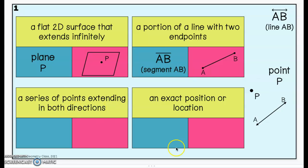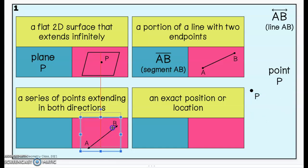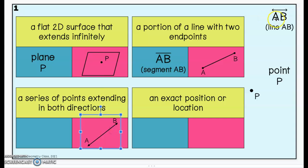A series of points extending in both directions — that means we're going to have arrows on both ends because we're going to extend infinitely in both directions. So here would be our picture. Arrows on both ends means that we are looking at a line. So this is line AB.